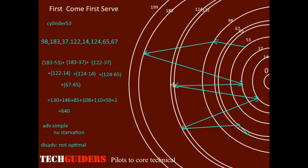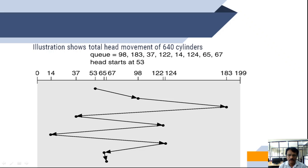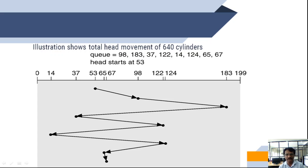So, First Come First Serve accumulates about 640 cylinder movements, as seen in the animated video with the large swings. We have seen its advantages and disadvantages. This is one of the simplest disk scheduling methods, but it is not optimal because it causes excessive head swings and cannot reduce access time effectively — 640 movements in this example is not a good result.